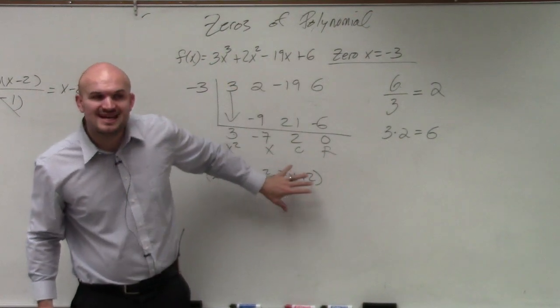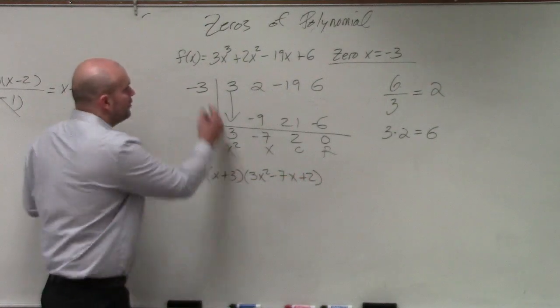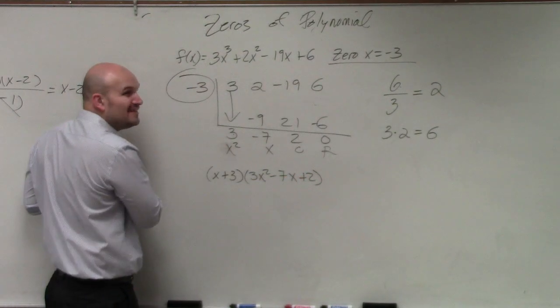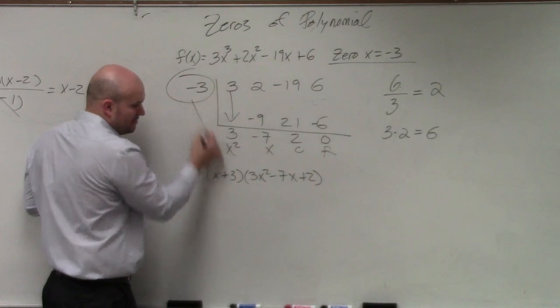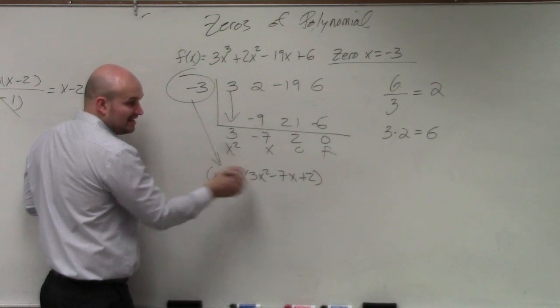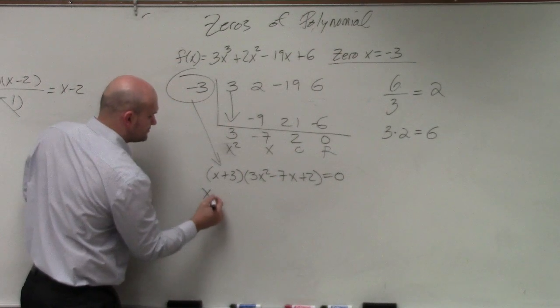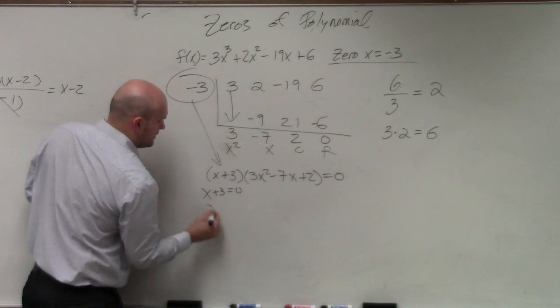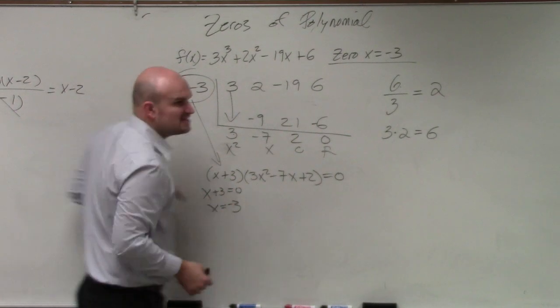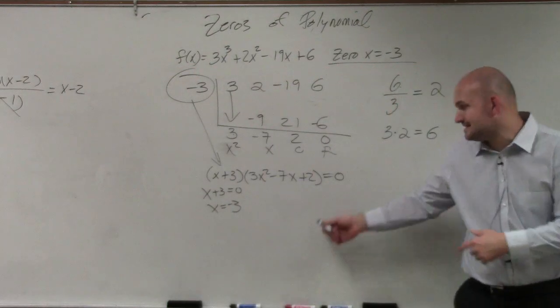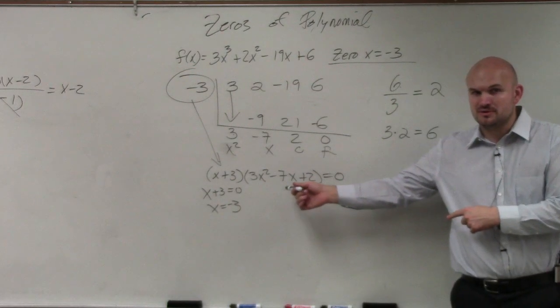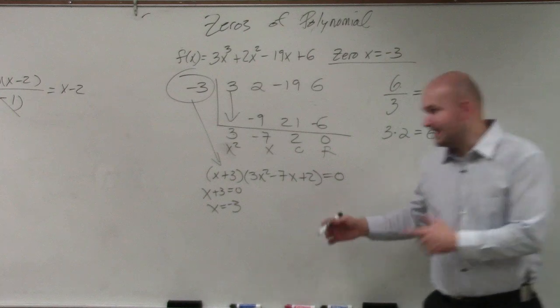Now, what's the question though? The question is asking us find all the zeros. We already know one zero. We need to find the remaining zeros. That one zero is shown right there. We need to find the other zero. So we already know x equals negative 3. That's fine. So what do we need to do? We need to set this equal to 0 and solve.